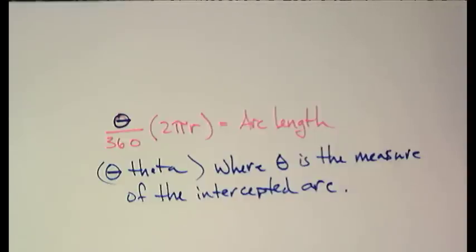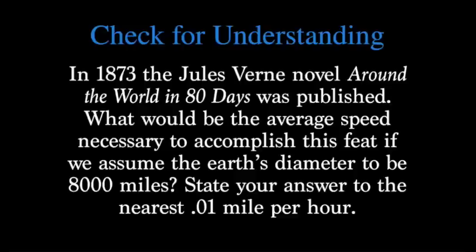Not too bad at all today. Last thing I want you to do is to look at a problem for you. I've got a little check for understanding problem. In 1873, the Jules Verne novel Around the World in 80 Days was published. What would be the average speed necessary to accomplish this feat if we assume the Earth's diameter to be 8,000 miles? Please state your answer to the nearest hundredth mile per hour. One little problem that will be on your video check. I think that you can do that. You can check with your peers and make sure to get the same answer and please show your work. See you next time.